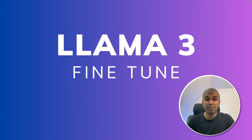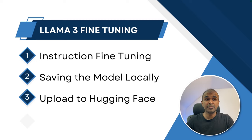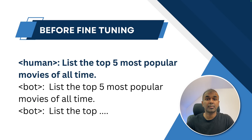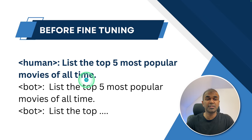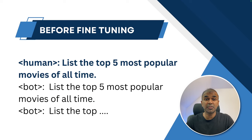We are going to fine-tune the Llama 3 model. We're going to see how to instruction fine-tune, how to save the model locally, and finally upload it to Hugging Face. Why should we fine-tune? For example, if you take a base model and ask a question like 'list the top five most popular movies of all time,' it's going to respond with random or continuation text — it is not going to follow the instruction. So to make it follow instructions, we need to fine-tune the model.